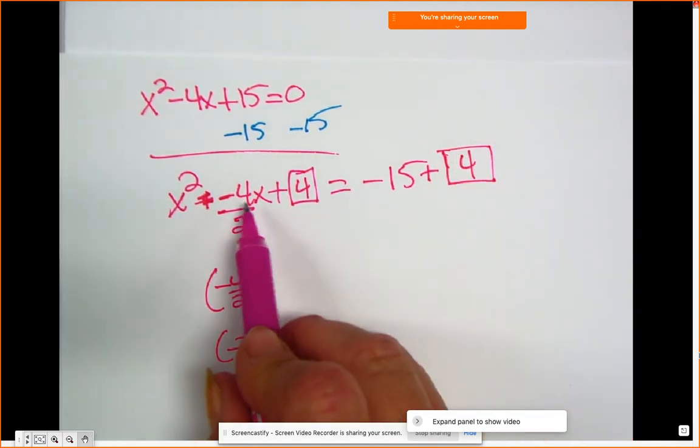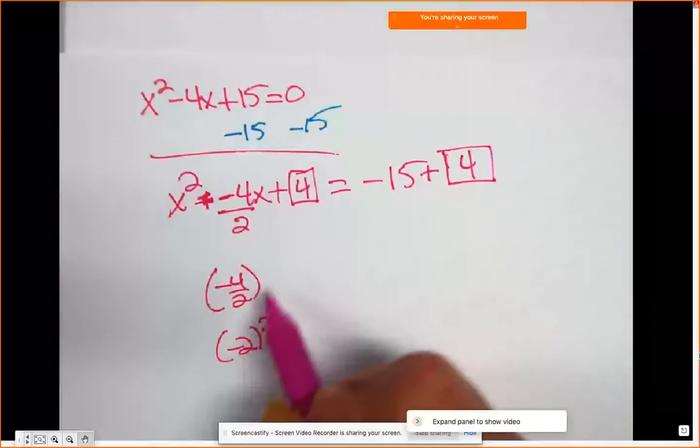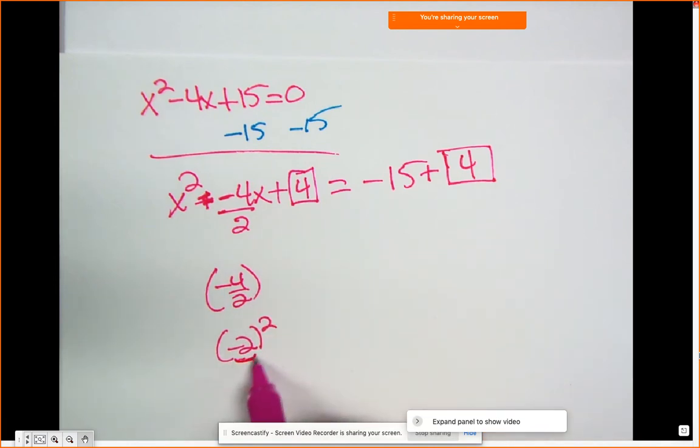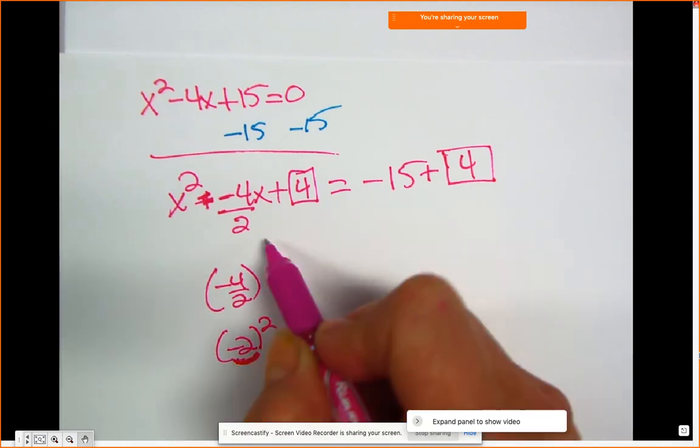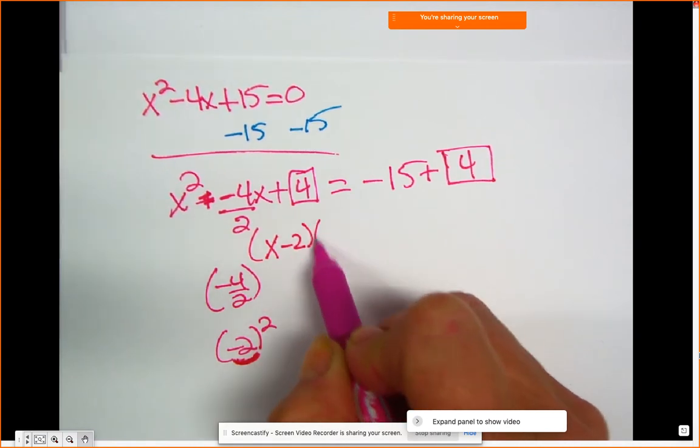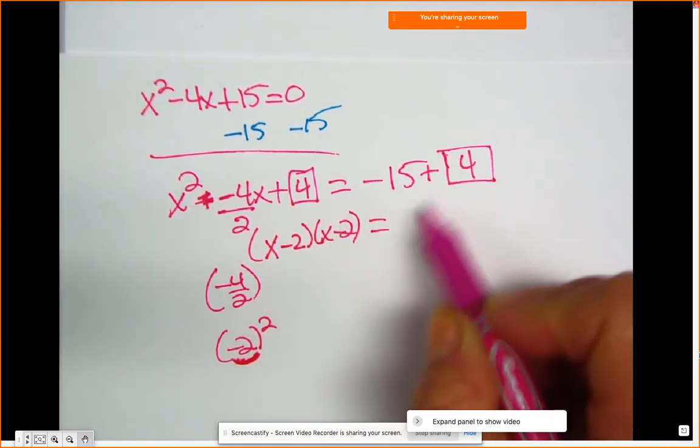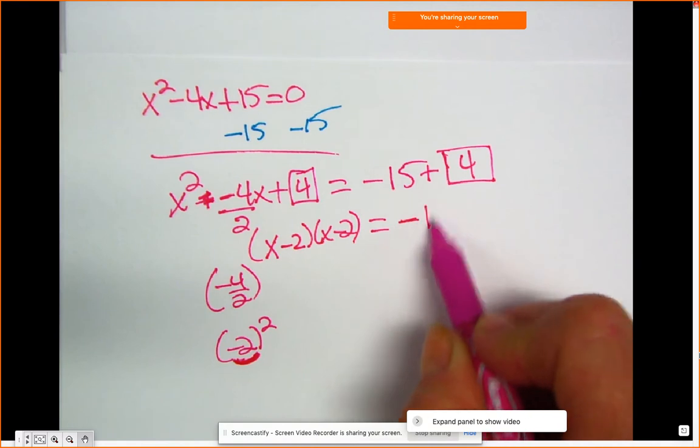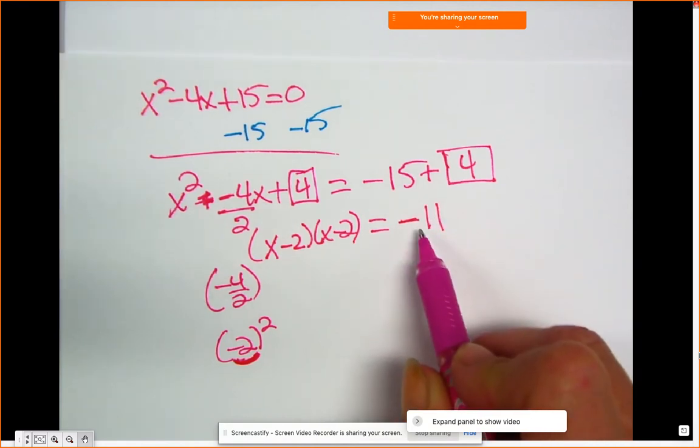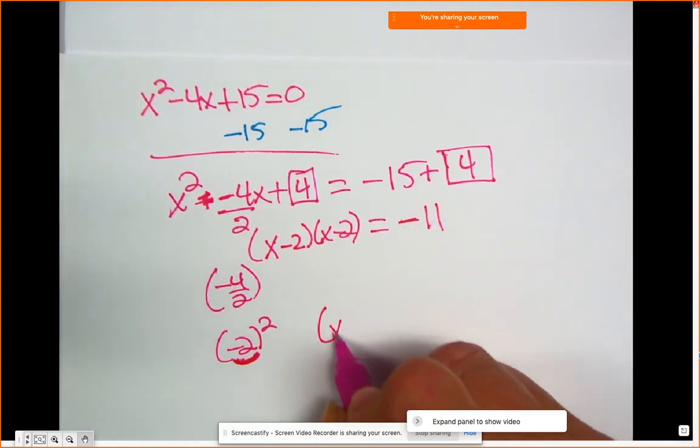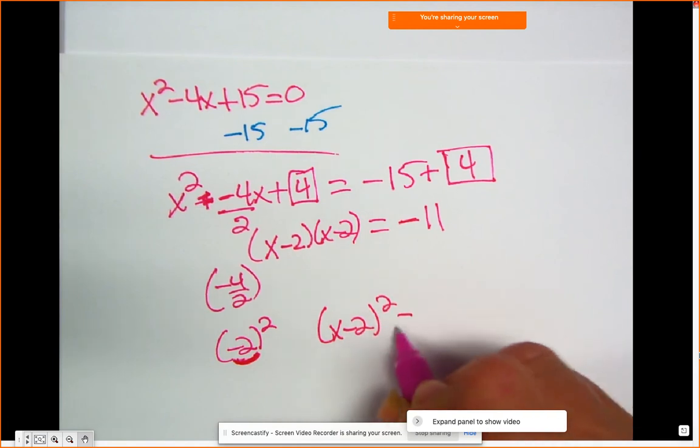Okay, I can now write this. If you want to factor it, you can, but I will tell you once you do half of that middle number, that's what's going to end up in your parentheses. You can write this as x minus 2 times x minus 2 equals negative 15 plus 4 is negative 11. See where I'm going to get the negative because I'm going to take a square root. So I write this as x minus 2 squared equals negative 11.